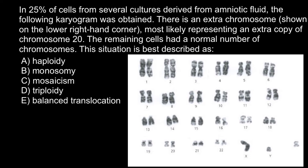Hello and welcome to Nikolai's genetics lessons. Today's problem is: in 25% of cells from several cultures derived from amniotic fluid, the following karyogram was obtained. There is an extra chromosome shown on the lower right-hand corner, most likely representing an extra copy of chromosome number 20. The remaining cells had a normal number of chromosomes. The situation is best described as — here are five answers to choose from.